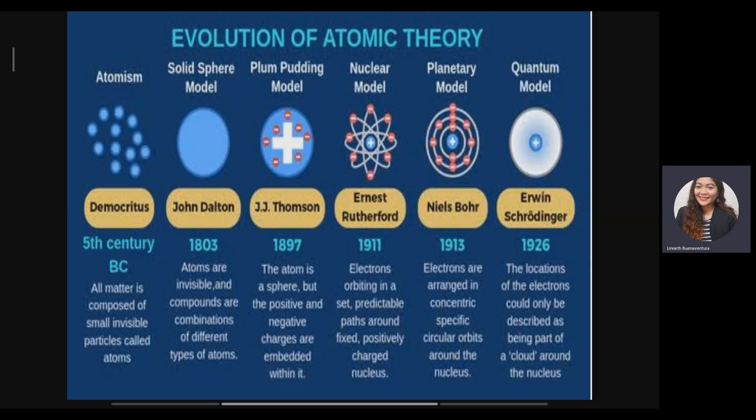Next, we have the solid sphere model introduced by John Dalton in 1803. According to him, atoms are indivisible and compounds are made up of the combination of two or more different types of atoms. We also have the plum pudding model introduced by JJ Thompson in 1897. According to him, the atom is a sphere that is entirely a positive charge, while the negative charges are embedded within it.